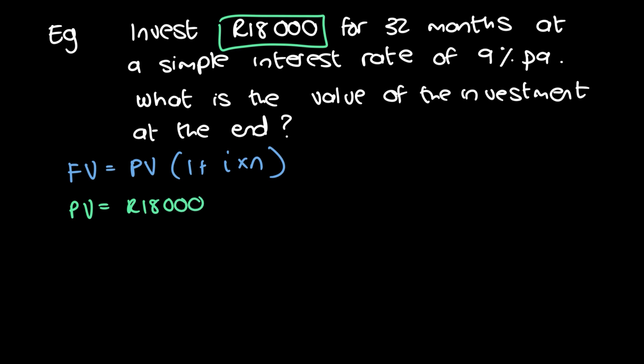Next up, we're going to look at what information do we have and is it in the right units? So we're going to invest 18,000. So the present value is 18,000. Then we have n is currently in months. So we noted that it's in months, it's 32 months, but it's at a simple interest rate of 9% per annum. So our i, and I don't want to use the big i, it's the small i, let me just fix that.